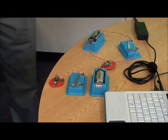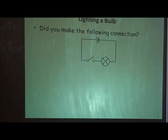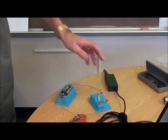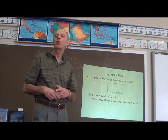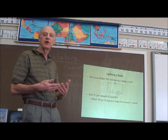Then I ask them if they made the particular connection I'm showing. I show them that as the switch closes, it lights the light bulb. I ask them whether it worked, or if it would have worked if they had done it that way. I ask what things are required to make the circuit work — it's got to be a complete circuit, as well as a working light bulb, a working battery, and a closed switch.